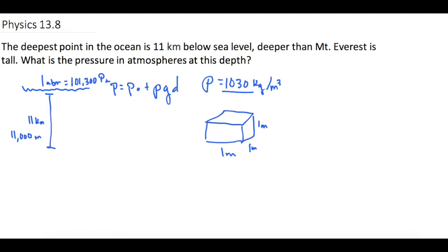So now we have everything, and we can figure out the pressure at this point down here. So P for pressure is equal to the initial pressure of 101,300 pascals,